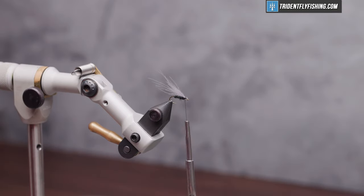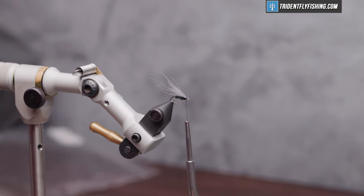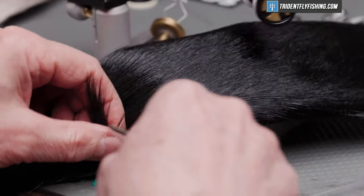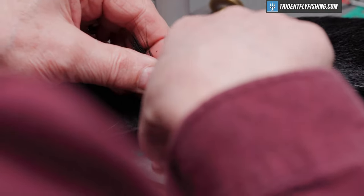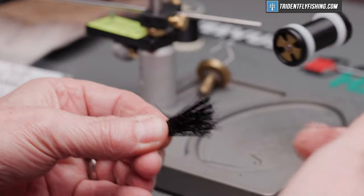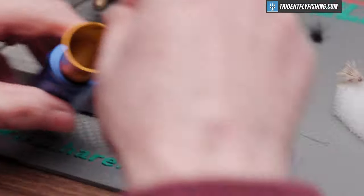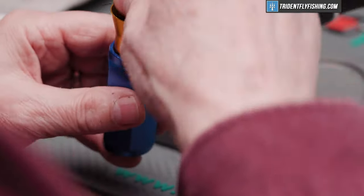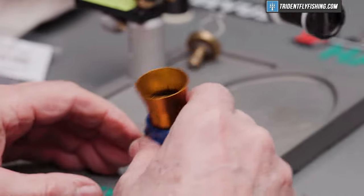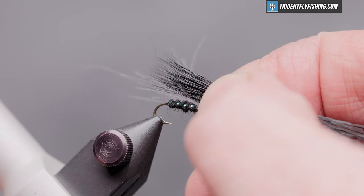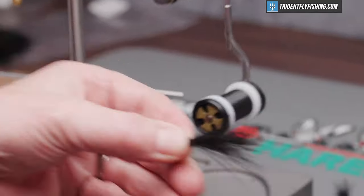And the main wing of the fly is going to be some hairline female deer hair in the color black. So we'll cut out a small clump here. And get rid of all the shorts and the fuzzies. And I'll start with this in a big stacker and see how it stacks. And we want this to extend back to about the bend of the hook. And we're going to cut off the excess of that.